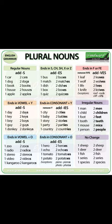Irregular nouns follow no specific rules. Examples: child → children, goose → geese, man → men, woman → women, tooth → teeth, foot → feet, mouse → mice, person → people.